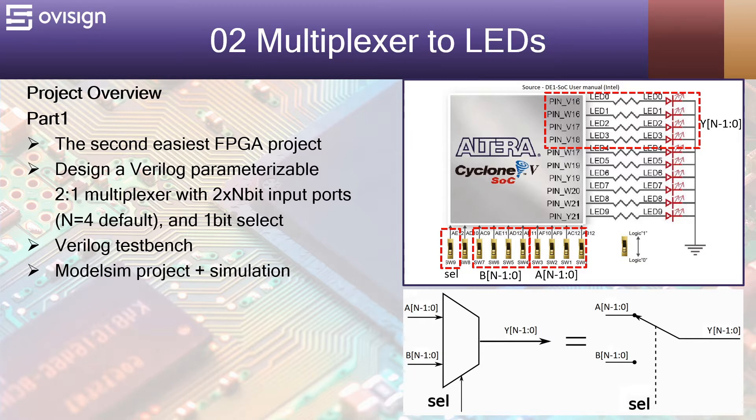Part 1: We are going to design a Verilog parameterizable 2 to 1 multiplexer with two N bit input ports and one bit select. N has a default value of 4.